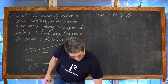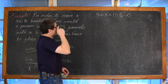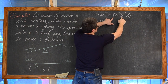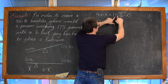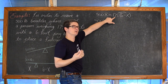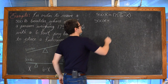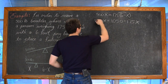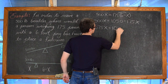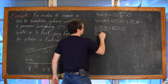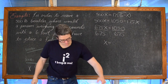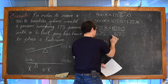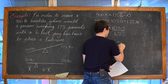Solving for x: distribute 175 through the parenthesis — 500x = 175(6 − x) = 1,050 − 175x. Adding 175x to both sides gives 675x = 1,050. Dividing both sides by 675 gives x approximately equal to 1.556 feet.